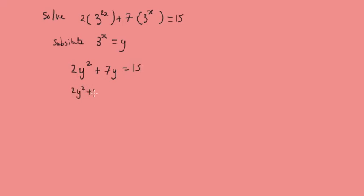So let's do that. So we're going to have 2y squared plus 7y equals 15. So 2y squared plus 7y minus 17 is just a quadratic equation, which we can factorize. So we have 2y minus 3 and then y plus 5 equals 0. So this gives us y is equal to 1.5 and y is equal to minus 5. Now, but y is 3x. So this is 3x equals 1.5 and 3x equals minus 5.